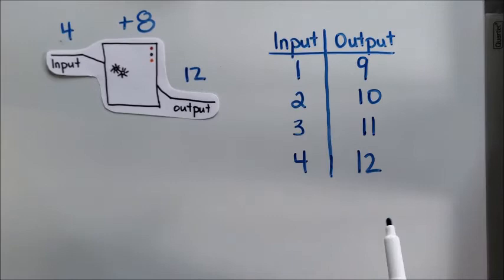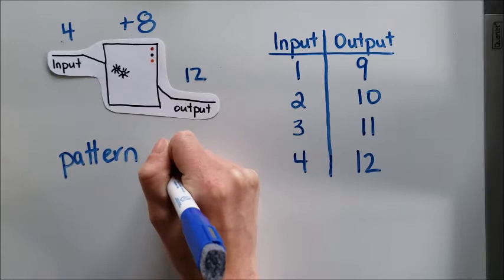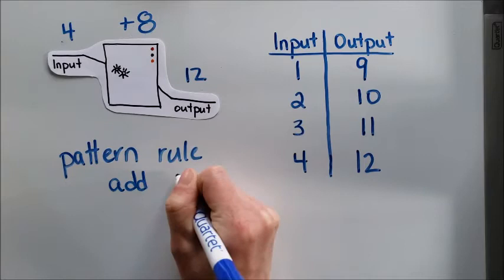So this table creates a really nice way that we can organize. Now another term that we should talk about is the pattern rule. The pattern rule for this input-output machine is add eight. So whatever I put in, I'm going to add eight.